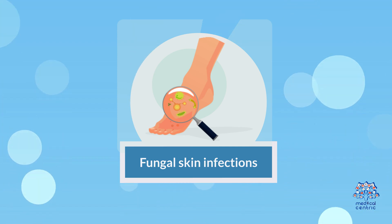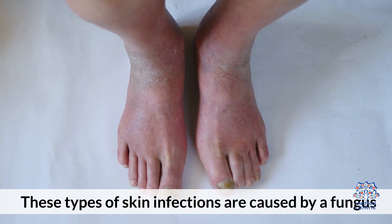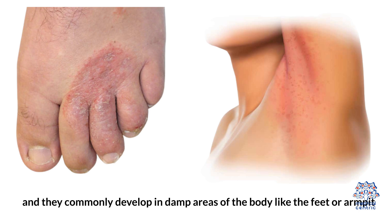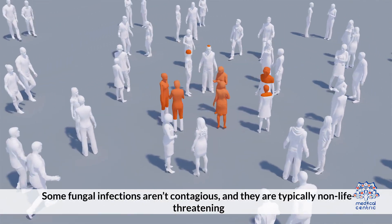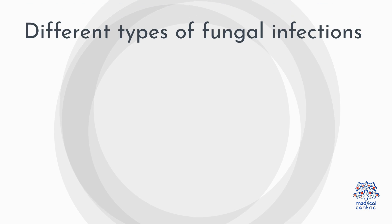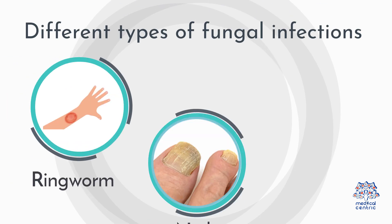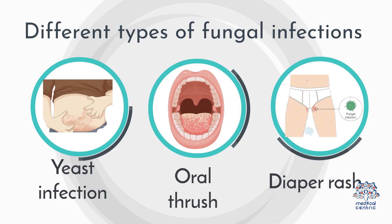3. Fungal skin infections are caused by a fungus, and they commonly develop in damp areas of the body, like the feet or armpit. Some fungal infections aren't contagious, and they are typically non-life-threatening. Different types of fungal infections include ringworm, nail fungus, athlete's foot, yeast infection, oral thrush, and diaper rash.